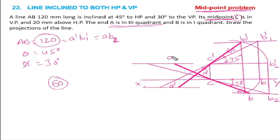We observe: end A is in the third quadrant — A' is above the XY reference line and front view is above, top view is below. End B is in the first quadrant — B' is in the front view above and top view below. A' drawn vertically from the XY line, B' drawn vertically on the XY line — if projections are correct, they confirm the solution.